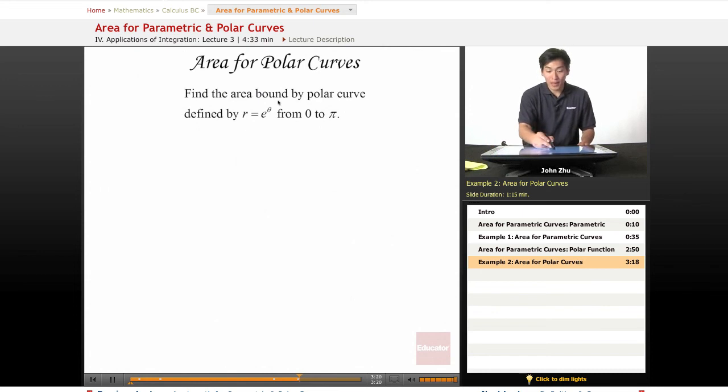Well, if we want to find the area bound by a polar curve defined by r equals e to the theta from 0 to pi,